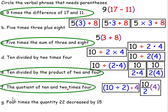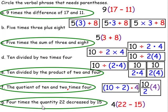Our last one on this page: 'four times the quantity.' When we see the word 'quantity,' it usually indicates we're going to need parentheses. The quantity is twenty-two decreased by fifteen, so it looks like 4(22 − 15). This one we will circle.